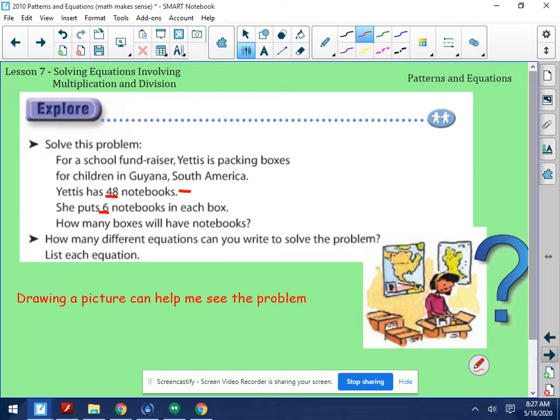So it then asks, how many different equations can you write to solve the problem? We'll list each equation. So we know that she's got 48 notebooks, and we're dividing them into groups of six, which will tell us the number of boxes that she'll have, B.